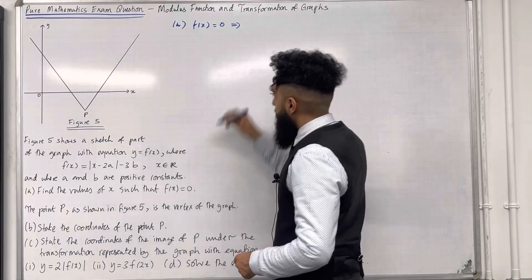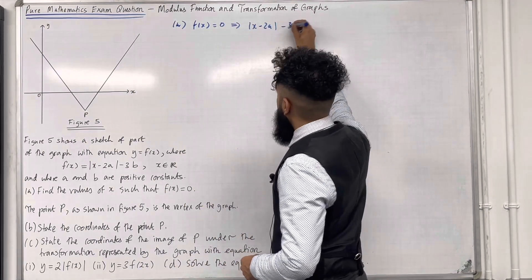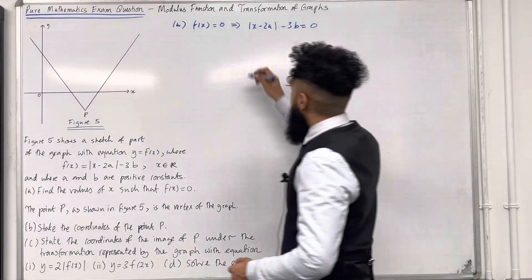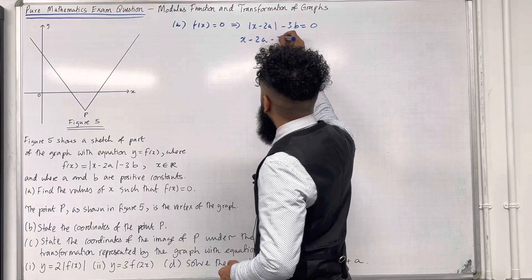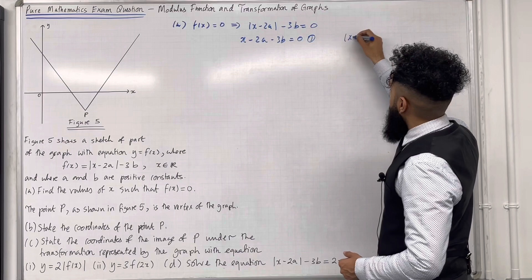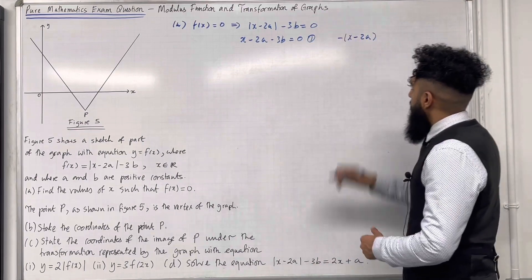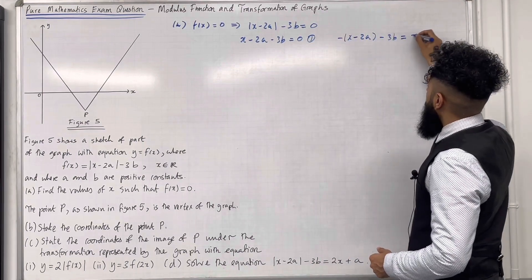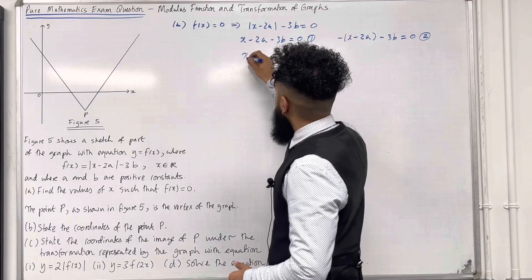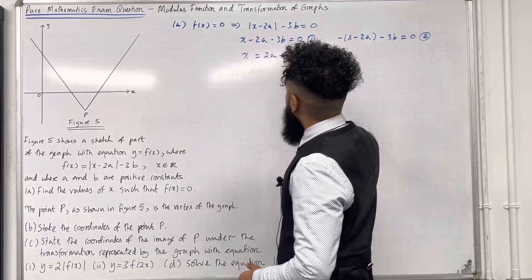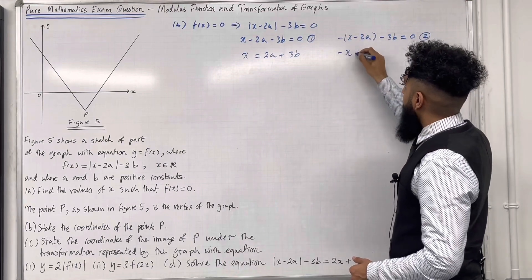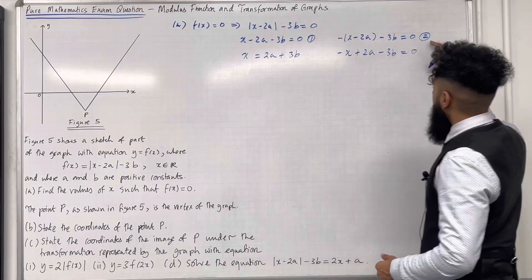We're trying to solve f(x) = 0. This implies that |x − 2a| − 3b = 0. We can generate two equations. The first one is x − 2a − 3b = 0 (equation 1), and the second one is −(x − 2a) − 3b = 0 (equation 2). We must solve both of these equations.